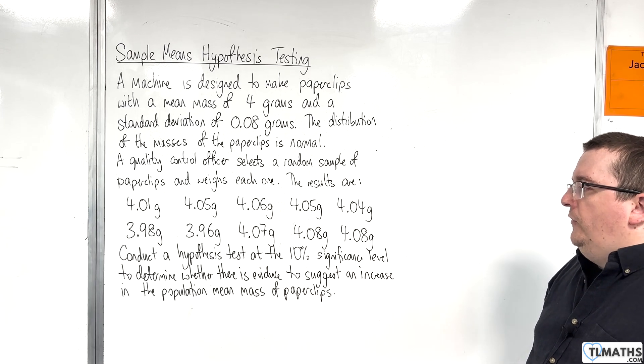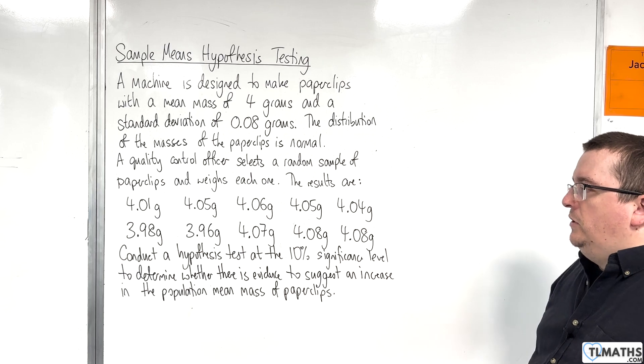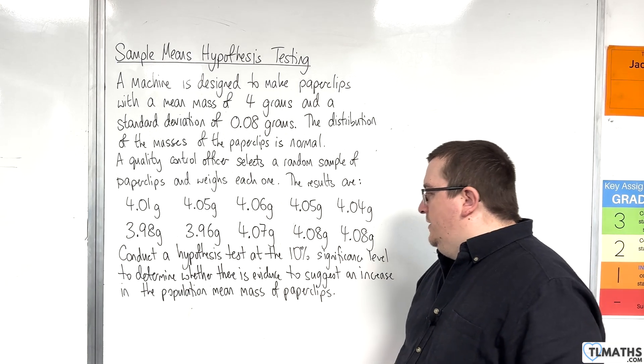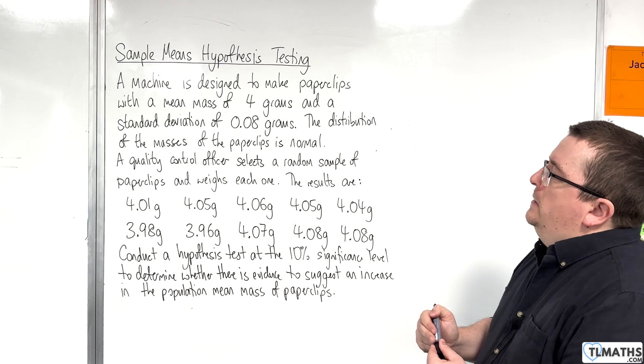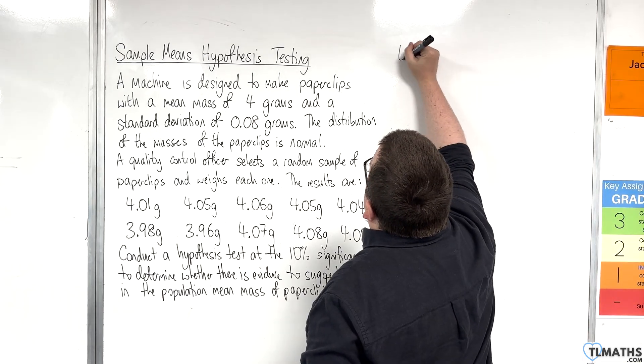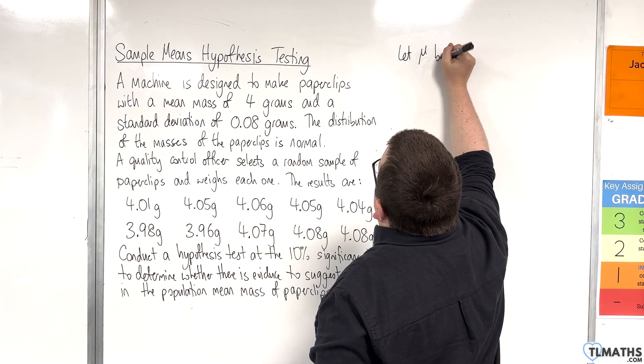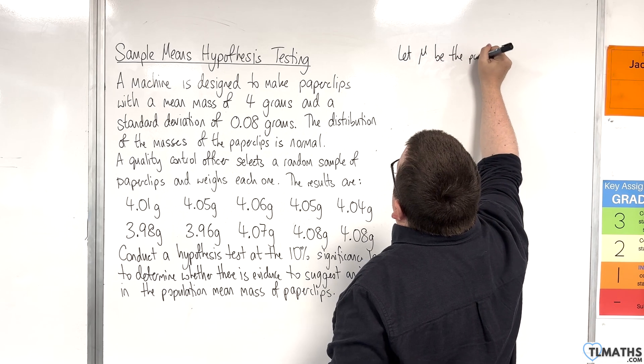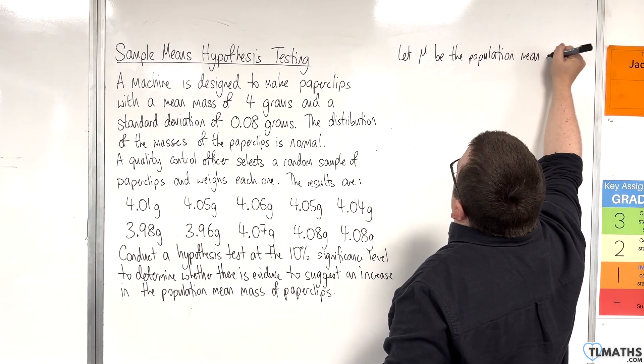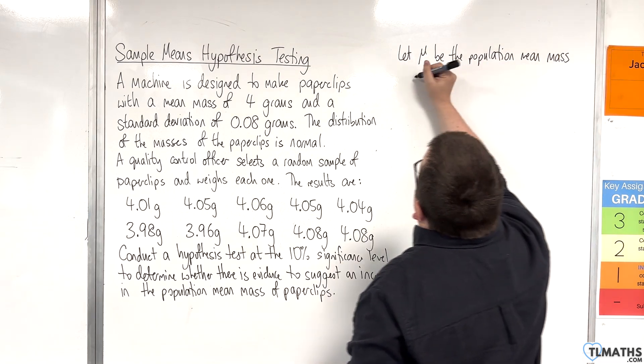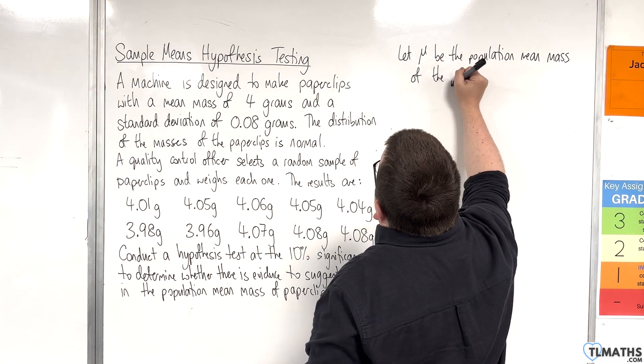Conduct a hypothesis test at the 10% significance level to determine whether there is evidence to suggest an increase in the population mean mass of paperclips. Let μ be the population mean mass of the paperclips.